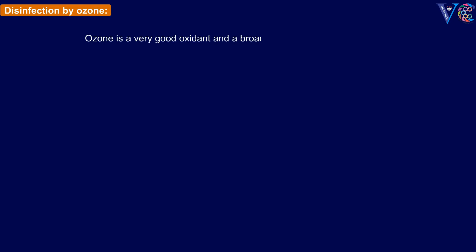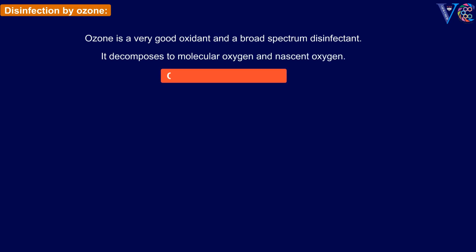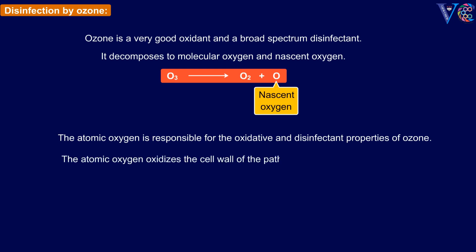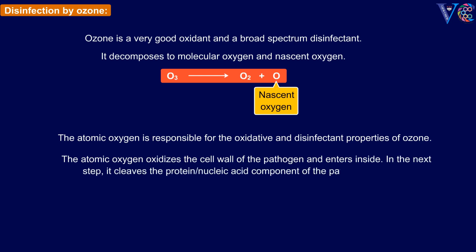Disinfection by ozone. Ozone is a very good oxidant and a broad-spectrum disinfectant. It decomposes to molecular oxygen and nascent oxygen. The atomic oxygen is responsible for the oxidative and disinfectant properties of ozone. The atomic oxygen oxidizes the cell wall of the pathogen and enters inside. In the next step, it cleaves the protein or nucleic acid component of the pathogen, thereby killing or inactivating the pathogen.